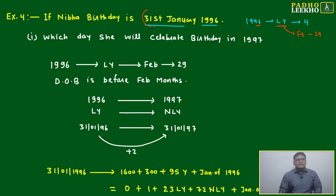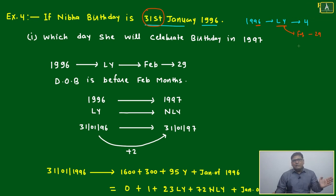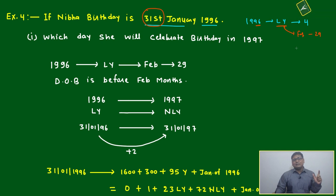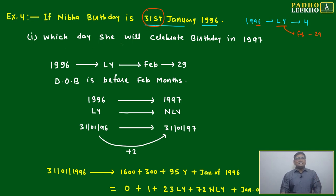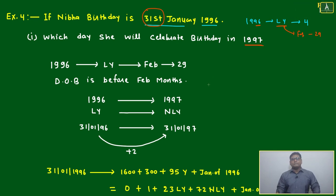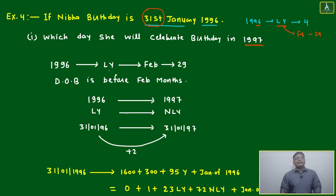The second key observation is which date the birthday falls on — is it before February or after February? That will make a difference. Here, 31st January is before February. Now, which day does she celebrate her birthday in 1997? First, 1996 is a leap year with February having 29 days, and the date of birth is before February.